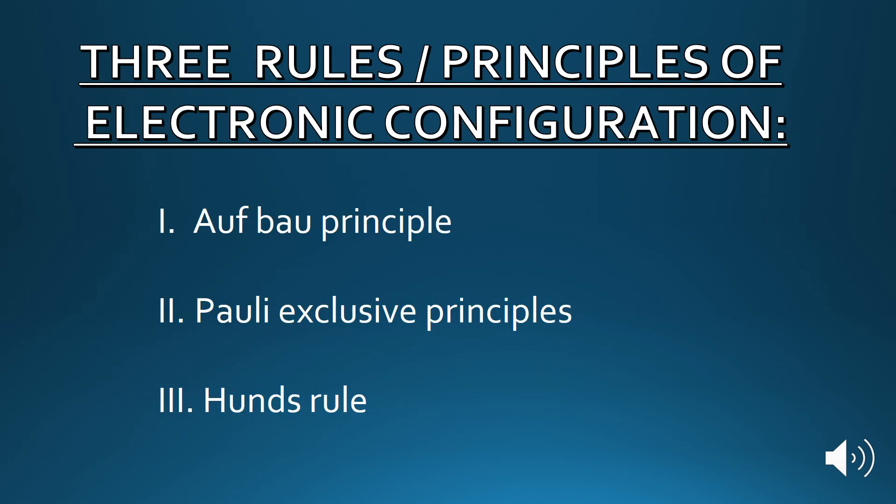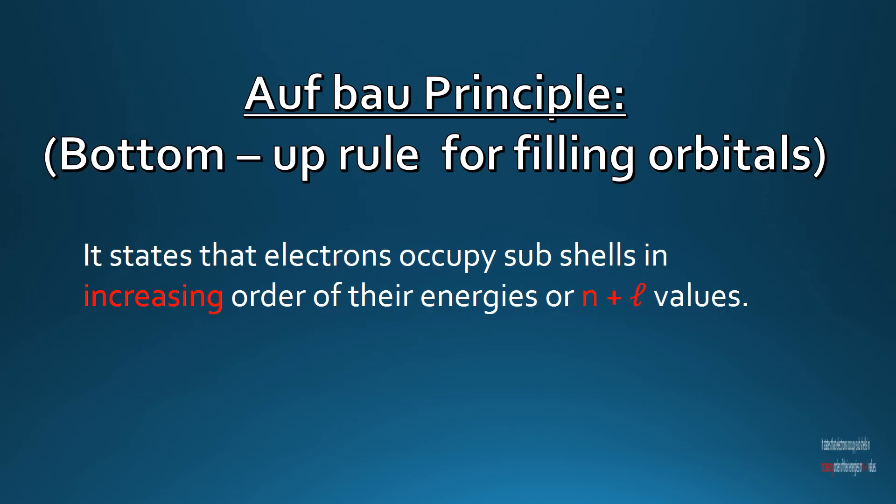The rules or principles of electronic configuration are the Aufbau principle, the Pauli exclusion principle, and Hund's rule. The Aufbau principle is a bottom-up rule of filling orbitals — it means we fill orbitals in increasing order of their energies. According to the Aufbau principle, the electron occupies the subshell in increasing order of their energies, using the n plus l rule.